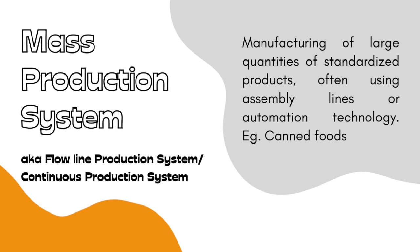Another disadvantage is that a block in any one stage will jam the whole system. For example, if there is a blockage in the machine used to slice in a chips factory, the entire production assembly is disrupted until that machine gets fixed. So that is the mass production system — its advantages and disadvantages.